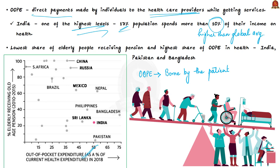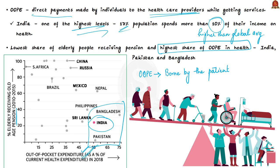This graph focuses on both pension and out-of-pocket expenditure. Countries like India, Pakistan, and Bangladesh had the lowest share of elderly people receiving pension in the last decade but the highest out-of-pocket expenditure. In India, only about 25% of elderly received pension while out-of-pocket expenditure was over 50%. By comparison, nearly 100% of elderly in China received pension and their out-of-pocket expenditure is just over 30%.